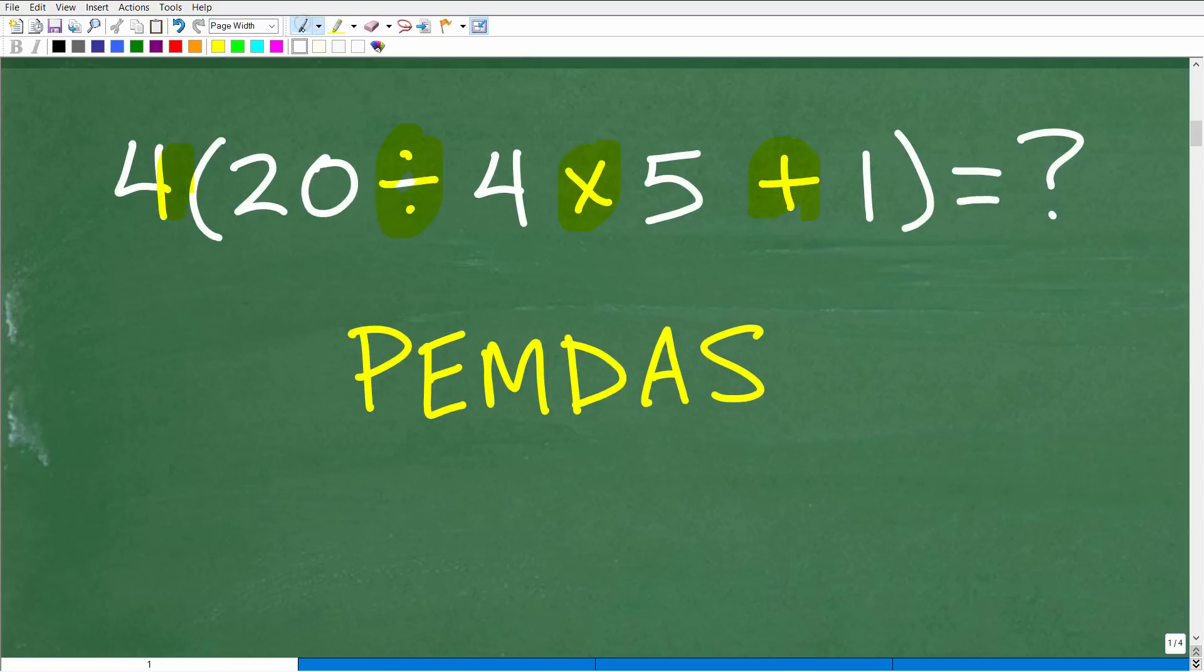But that's not really the key to doing this problem because I'm going to assume that you know how to deal with basic number operations. But the key is knowing this. And what is this? Well, this is a little mnemonic, a little phrase that represents the correct order of operations.